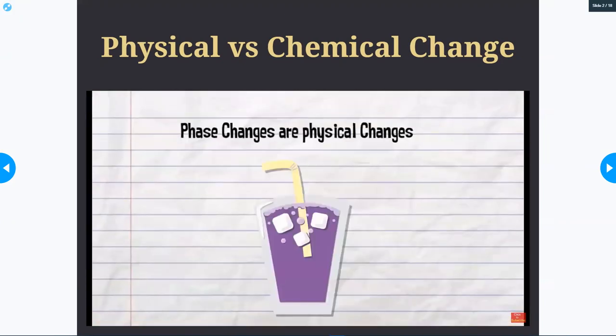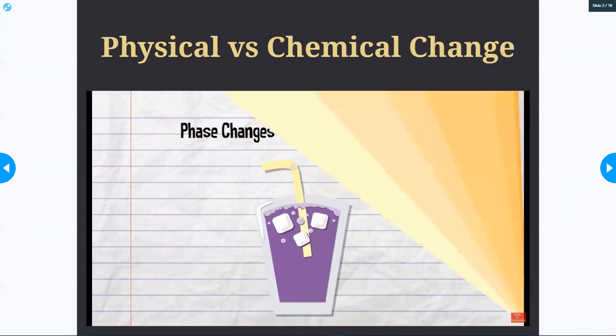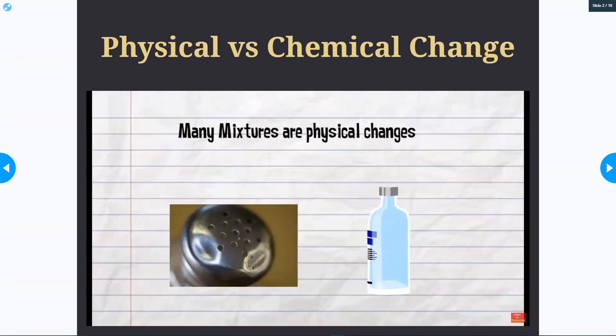Phase changes are physical changes. When ice goes from a solid to a liquid to a gas and then back, those are physical changes. Most mixtures are physical changes. For example, mixing salt and water together is a physical change because the salt and water can be separated out later.